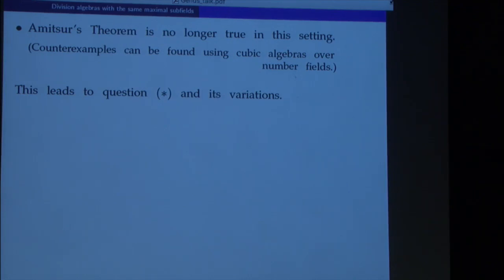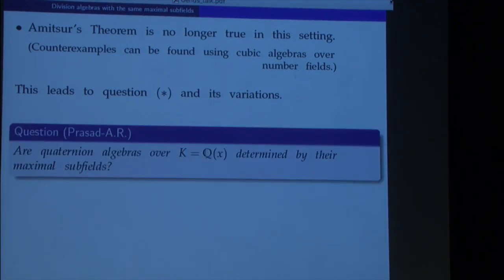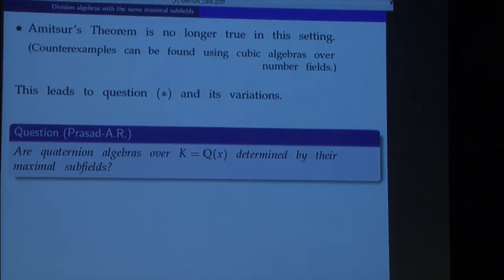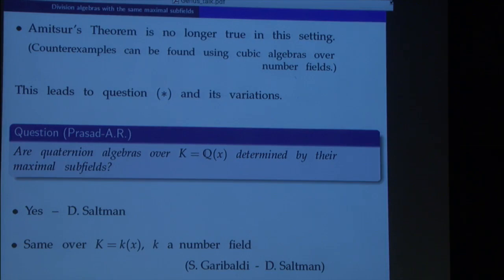When we came across this question we started looking through the literature, and not much seemed to be known at that point. In our paper, we asked the following simple-minded question: the simplest field beyond number fields is the field of rational functions over Q, and the question was whether quaternion algebras over that field are uniquely determined by their maximal subfields. Soon afterwards David Saltman showed that it is indeed the case. Then in a joint work with Skip Garibaldi, they showed that the answer is still yes for the field of rational functions over a number field.